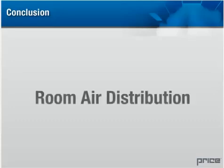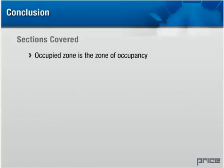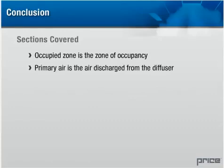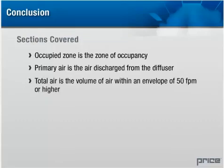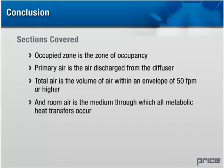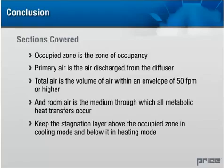You should now have a better understanding of the mechanics of room air distribution. The occupied zone is the zone of occupancy. Primary air is the air discharged from the diffuser. Total air is the volume of air within an envelope of fifty feet per minute or higher air velocity. Room air is the medium through which all metabolic heat transfers occur. Remember to keep the stagnation layer above the occupied zone in cooling mode and below it in heating mode.